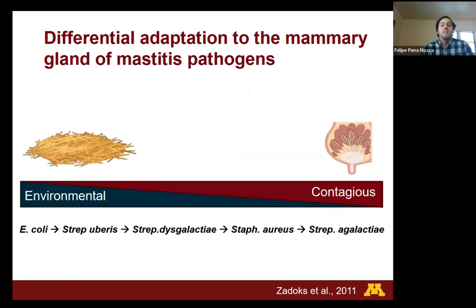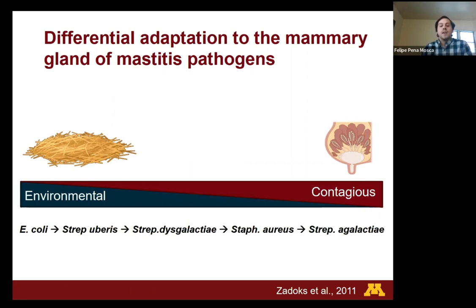At the same time, mastitis pathogens have divergent adaptation to the mammary gland. Some tend to be more environmental and are less adapted to the mammary gland, such as E. coli. On the other hand, we have other microorganisms that are well adapted to the mammary gland and tend to persist for long periods if they remain untreated, such as Staph aureus and Strep agalactiae. For this reason, these microorganisms represent a potential issue for organic dairies.